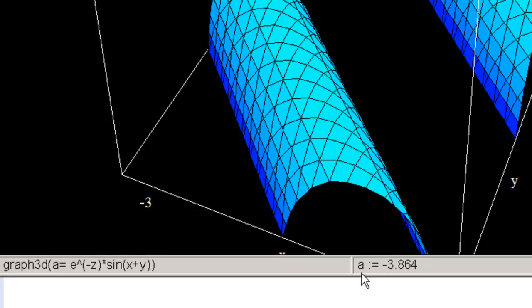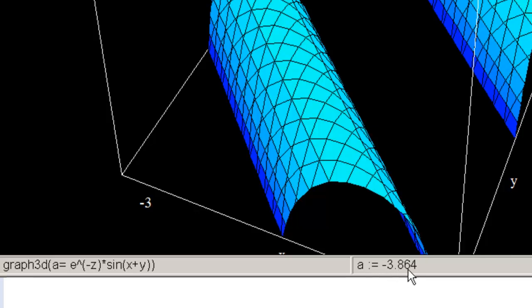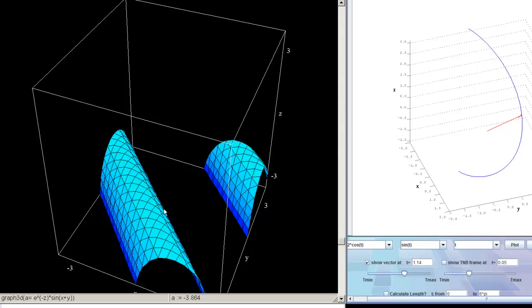But we let a equal the temperature. And for a fixed temperature, for example, negative 3.864 is the temperature. For a fixed temperature like this negative 3.864, these are all the points in space in this bounding box, of course, from negative 3 to 3 to negative 3 to 3 in x, y, and z respectively, right?